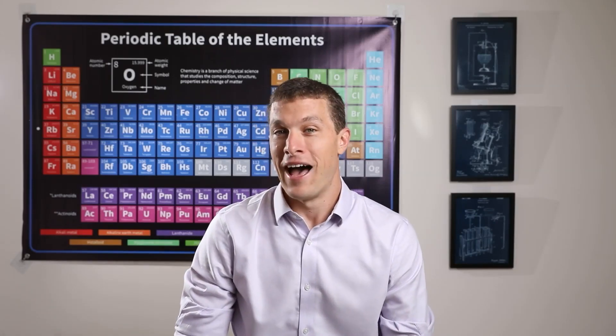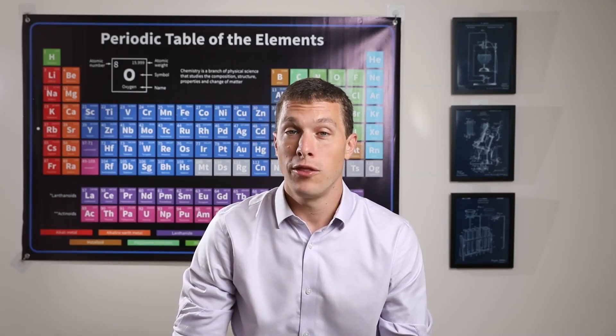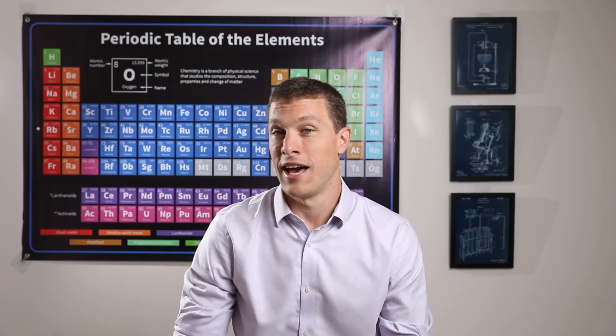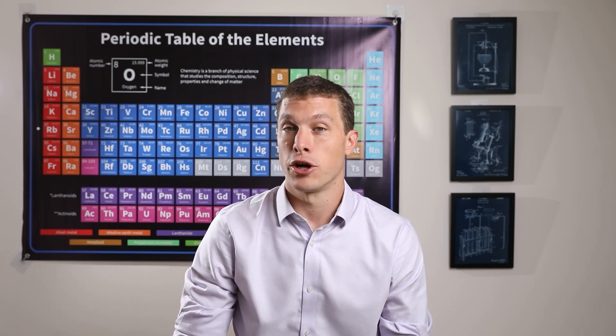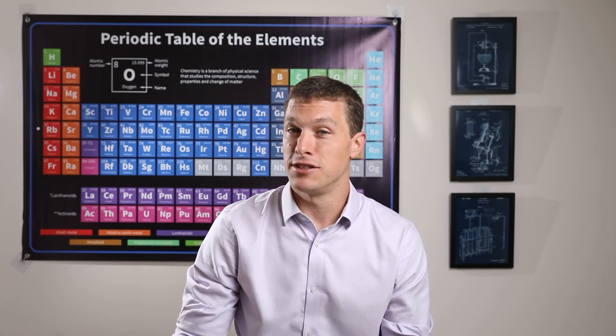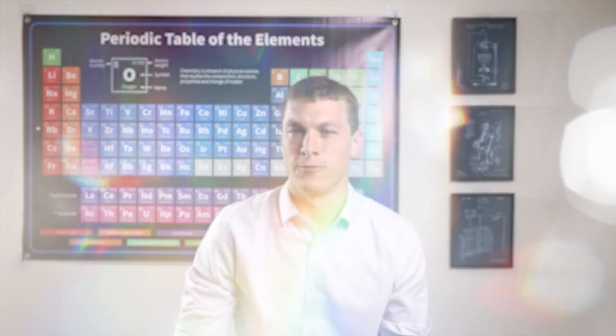We've talked a lot about atoms in this class, and we've gone through several different models of what the atom looks like. In this lesson, we finally arrive at our current best picture of the atom. This might change in the future, but for now the best picture we have of the atom is called the quantum model. Let's take a look and understand this model.